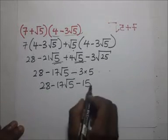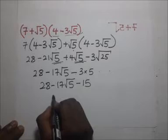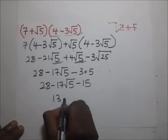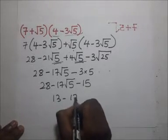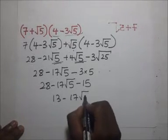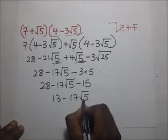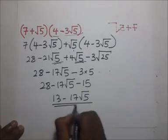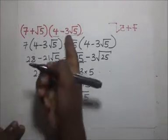28 minus 15 gives us 13, so the final answer is 13 minus 17√5. And that is how we simplify that expression.